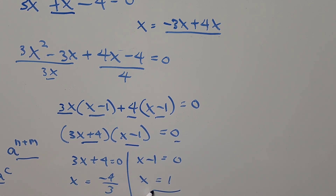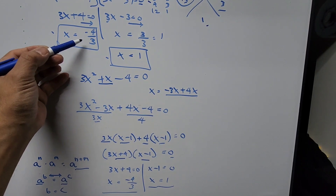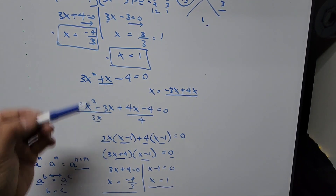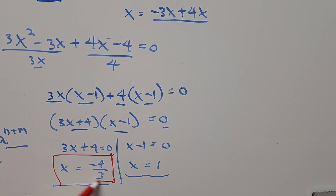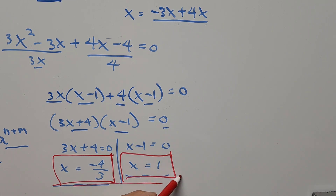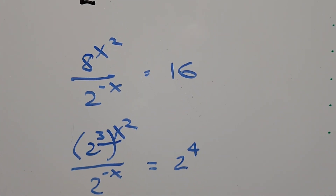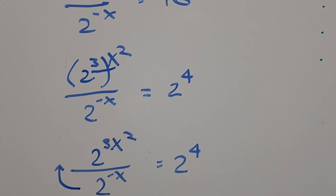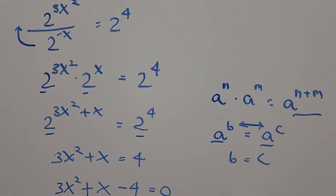We have arrived at the same answers as Method 1. Both methods confirm: x equals 1 and x equals negative 4 thirds. These are our final answers. For those new to my channel or who haven't subscribed yet, I would appreciate it if you hit the like button and subscribe for more videos. Thank you very much. I will see you on the next one.